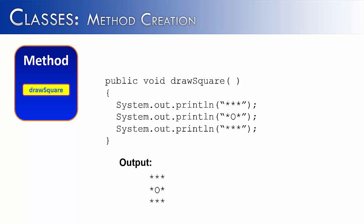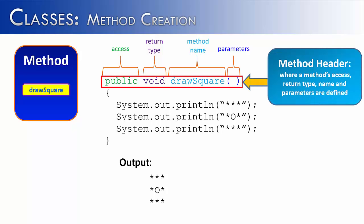I've color coded it here for you to name the different parts of this particular method. First, in green we have access, in purple void which is the return type, drawSquare which is the name of the method, and then finally we have the parameters in blue. All of these parts make up something called a method header. The method header is where a method's access, return type, name, and parameters are defined.